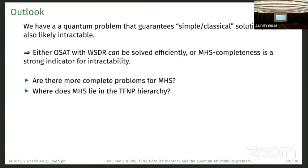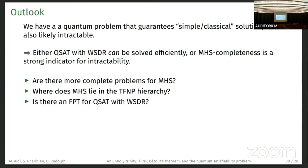What we're interested in is are there more complete problems for MHS? Where does MHS actually lie in the TFNP hierarchy? Can we show any connections to the existing classes? Another idea would be whether there's a no-go result whether we can find FPT algorithms for quantum SAT with a WSDR, where we fix some parameter.